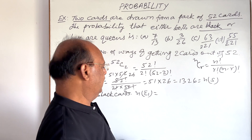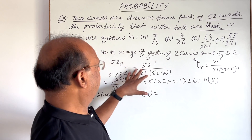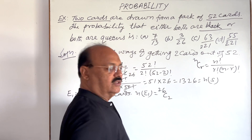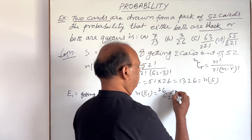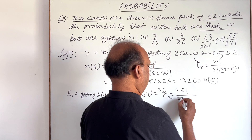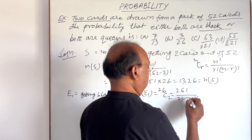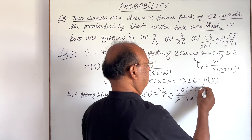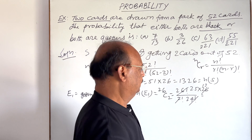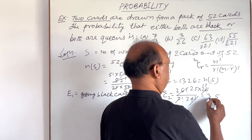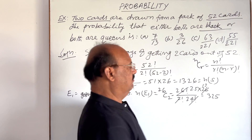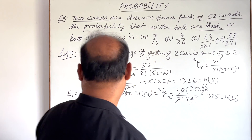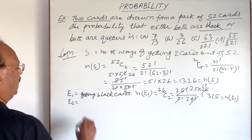We will use the same formula here. Out of 26 black cards we have to get two cards, so n(E1) = 26C2. Simplifying: 26! / (2! × 24!) = 25 × 26 / 2 = 25 × 13 = 325. So n(E1) = 325.